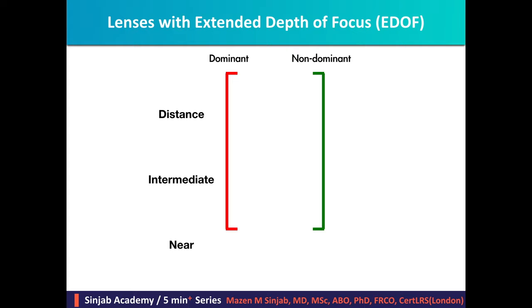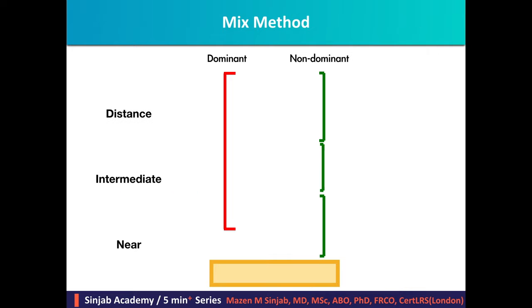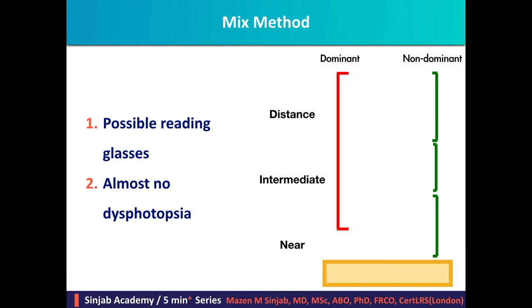Premium lenses with extended depth of focus are excellent for distance and intermediate zones, but not for near vision; therefore, the patient will need reading glasses. Dysphotopsia with this type is very uncommon. Some surgeons mix by implanting an extended depth of focus lens in the dominant eye and a trifocal in the non-dominant eye to achieve better vision and reduced dysphotopsia. With this mix, patients may only need glasses for fine prints, and dysphotopsia is generally not induced.